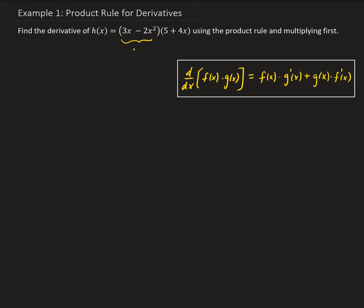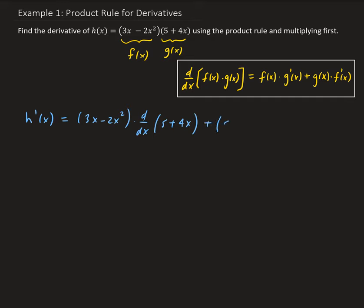We're going to call this f of x, and we'll call this g of x. So h prime of x: we're going to have f of x, which is 3x minus 2x squared, and multiply it by the derivative of the second part, which is 5 plus 4x. Then we're going to add that to g of x — so 5 plus 4x — and multiply that by the derivative of the first function, which is 3x minus 2x squared.